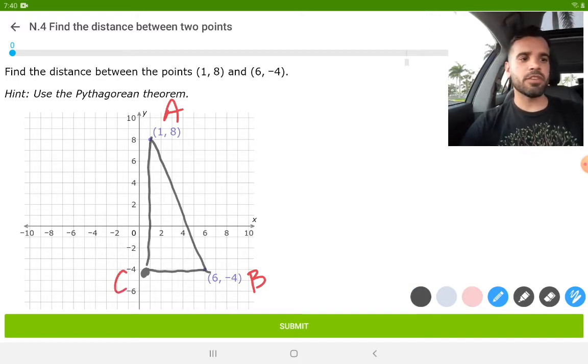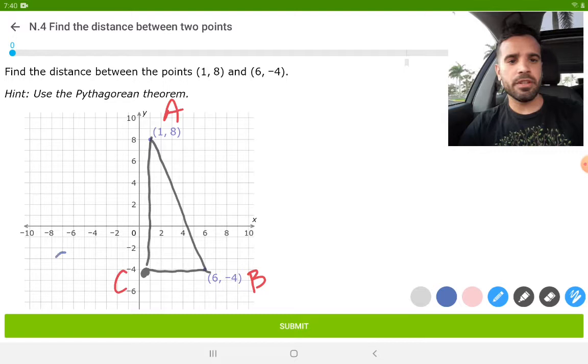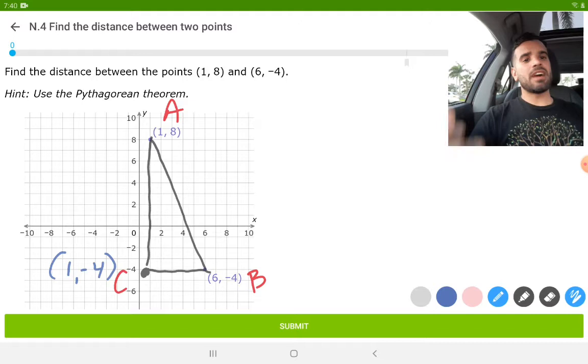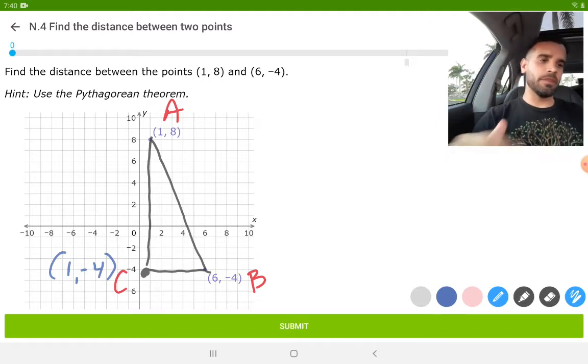Let's find the ordered pair for point C, which is going to be at one negative four. So what we want to do now is find the distance of the two shorter legs, which is the distance from A to C and the distance from C to B. And once we have those two short legs, it'll allow us to find the distance of A to B.